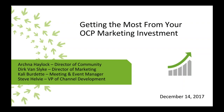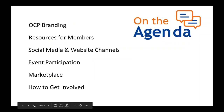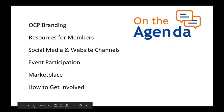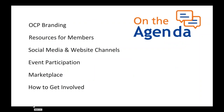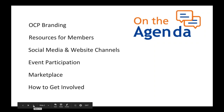Now I'm just going to go through quickly our agenda for today's session. We're going to talk about the following things: We'll start with OCP branding and some resources for you all as members. Then we'll go through our social media and website channels, and some ideas about how you all can get participated in our events. And then our marketplace, and then the best way for you all to get involved as OCP members.